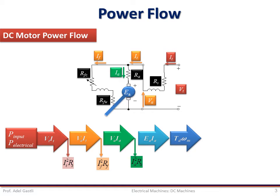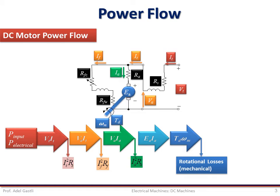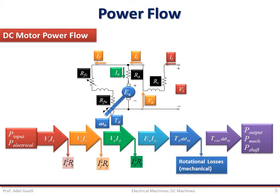This remaining armature electric power is converted into mechanical power TD × ωM, developed based on the principle of electromechanical energy conversion, where TD is the developed torque and ωM is the speed of rotation of the armature. However, because of core losses and mechanical rotational losses, the effective output torque delivered to the shaft or load is less than the developed torque. This output mechanical power is also called shaft power.